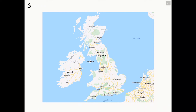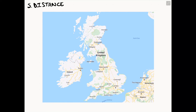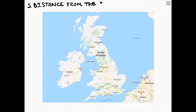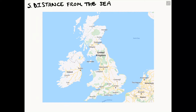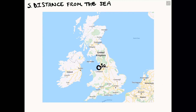The fifth and final factor which influences the UK's climate is distance from the sea. Oceans heat up and cool down much slower than land, meaning coastal locations tend to be cooler in summer and warmer in winter compared to inland places at the same latitude and altitude. Applying this to Southport, it will receive cooler summers but slightly warmer winters than the rest of the UK, making it less likely to receive snowfall.